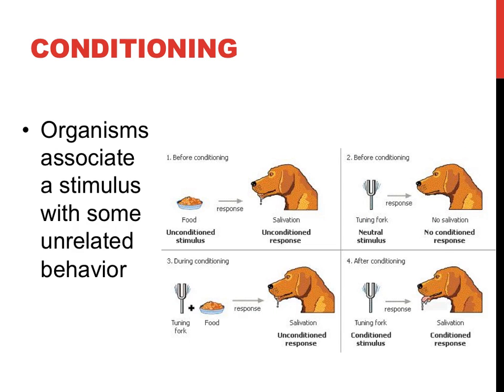Conditioning is yet another example of a learned behavior. With conditioning, organisms eventually associate some stimulus with another stimulus that could be related or even completely unrelated. In classical conditioning, scientists set up an experiment to show how these relationships between unrelated stimuli are formed. Dogs naturally salivate when they see food; they do not, however, normally salivate if a tuning fork is struck and a particular sound is made. If, over an extended period of time, a tuning fork is struck every time food is introduced to the dog, the dog will eventually salivate when it hears the tuning fork, even if there's no food present. The picture to the right exhibits this experimental setup as well as the results.